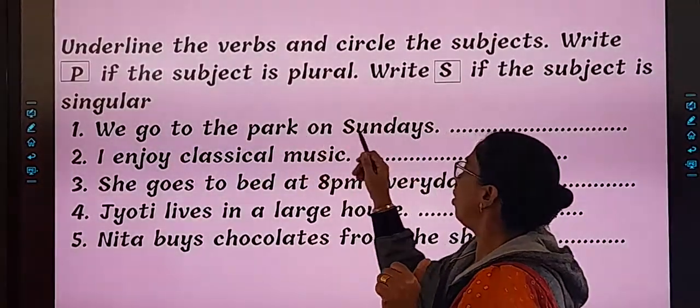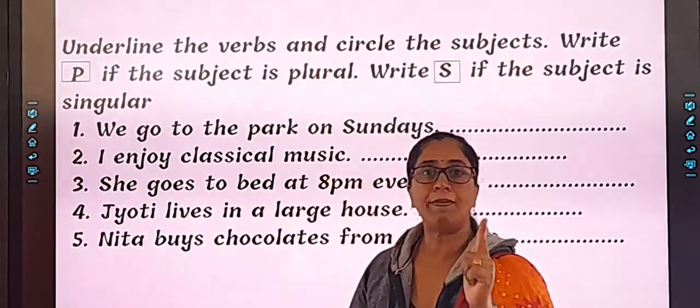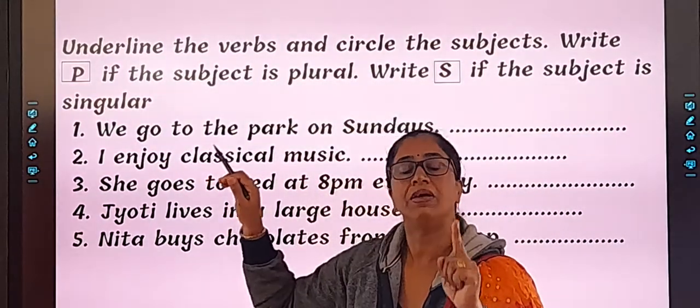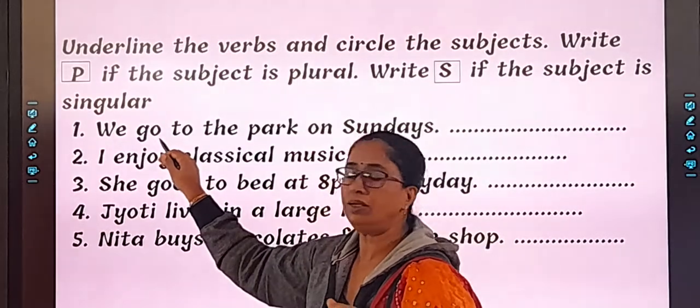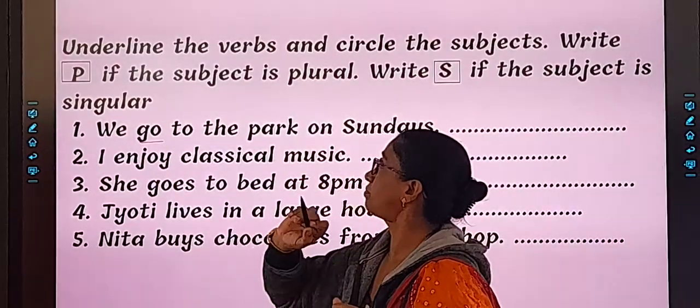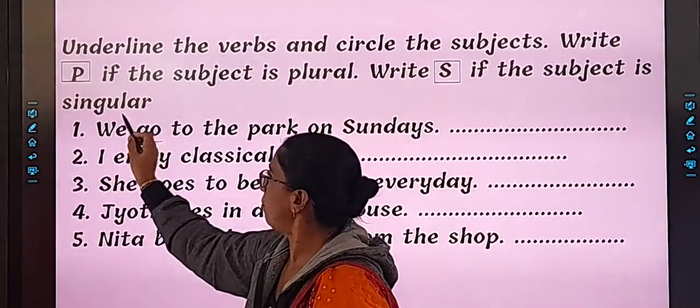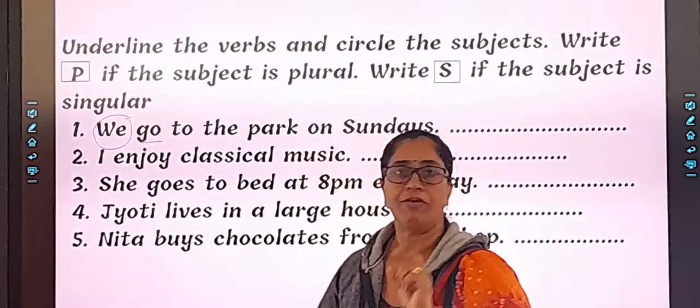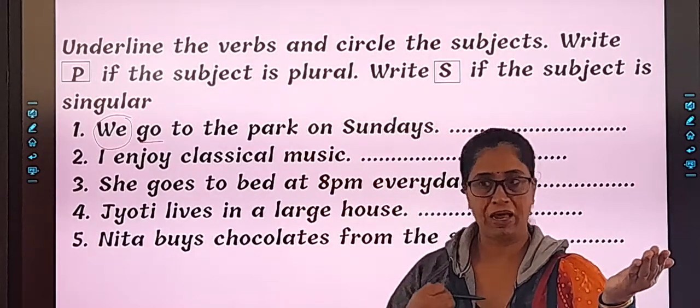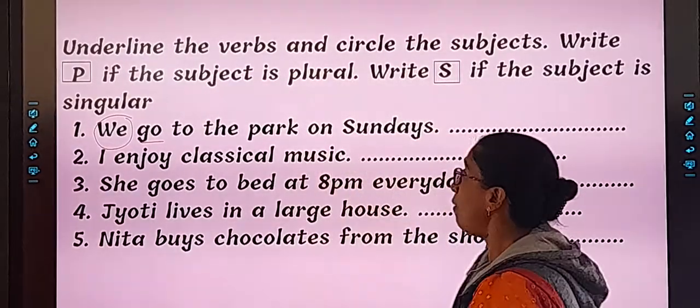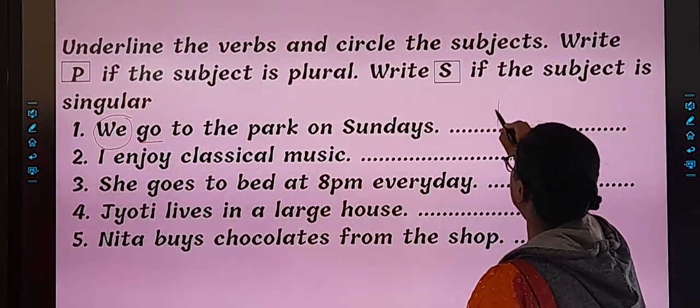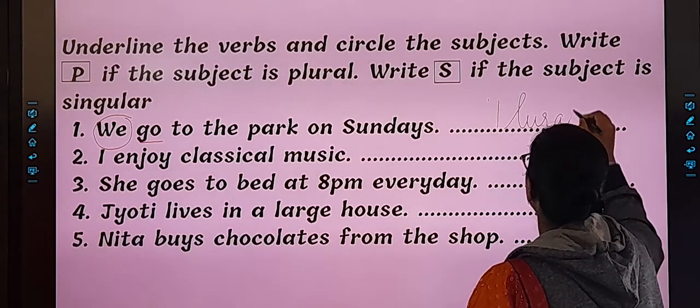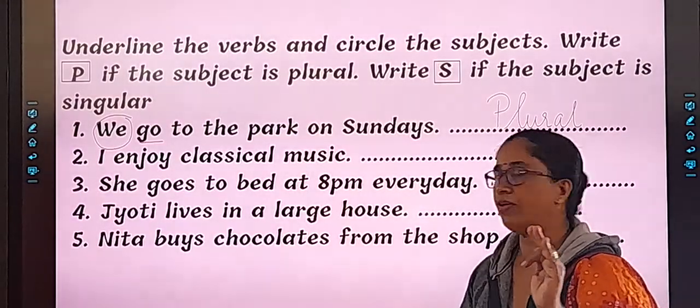We go to the park on Sunday. We are talking about we. So underline the verb, circle the subject. What is a verb? Verb means action. What action? Go. So you will underline the verb, circle the subject. Who are we talking about? We. So you will circle the subject. And look at the subject. We - it is more than one. We are talking about we, so it is plural, more than one. So plural, you will put P. Or you can even write plural, P-L-U-R-A-L. Correct?